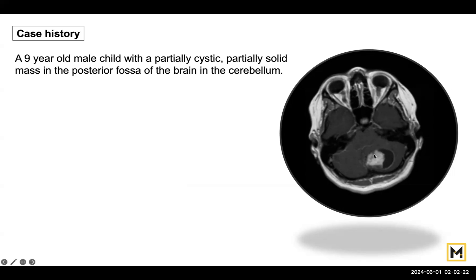This is the cystic area while this is the solid area. You also have to remember that there is another lesion called medulloblastoma that arises from the posterior fossa in the region of the cerebellum, and you should know the difference between a pilocytic astrocytoma and a medulloblastoma radiologically. A medulloblastoma would be central in location along the vermis and it would be solid and not partially cystic like a pilocytic astrocytoma.